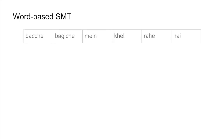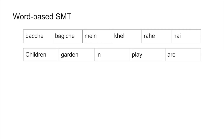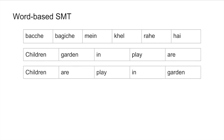Word-based statistical machine translation has a word-to-word dictionary which tries to translate a source sentence into a target sentence based on words in the dictionary. For example, 'bachche bagiiche mein khel rahe' can be translated word by word — bachche as children, bagiiche as garden — giving 'children in garden are playing.' The language model then reorders this to produce 'children are playing in garden.'